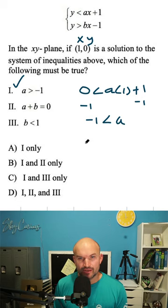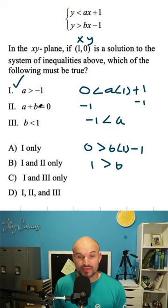When we go and plug it into the other example, here we're going to have 0 is greater than b times 1 minus 1. We're going to add 1 to the other side, so 1 is going to be greater than b, or b is less than 1. So we know 3 is going to be true.